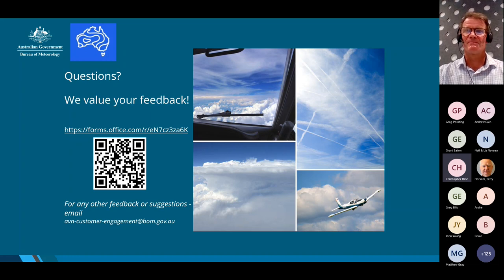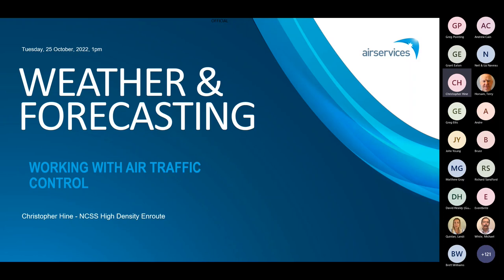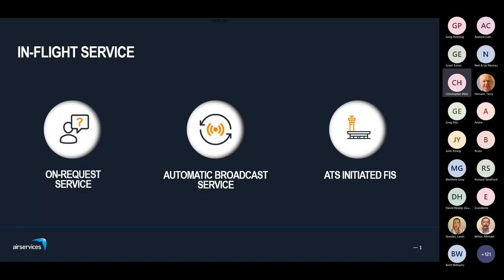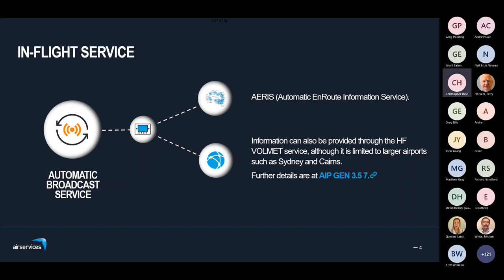Thanks Michael. Good afternoon everyone — my name is Chris Hein, I'm one of the National Check Controllers for en route with Airservices. Once you're actually in the air, there are three facets to our in-flight service: the on-request service, the automatic broadcast, and when ATS initiates the flight information service with a weather component. For the on-request service, you can call up ATC on VHF or alternatively call HF using the callsign Flight Watch and ask for any weather product you need — for example if you change destination and need a new TAF.